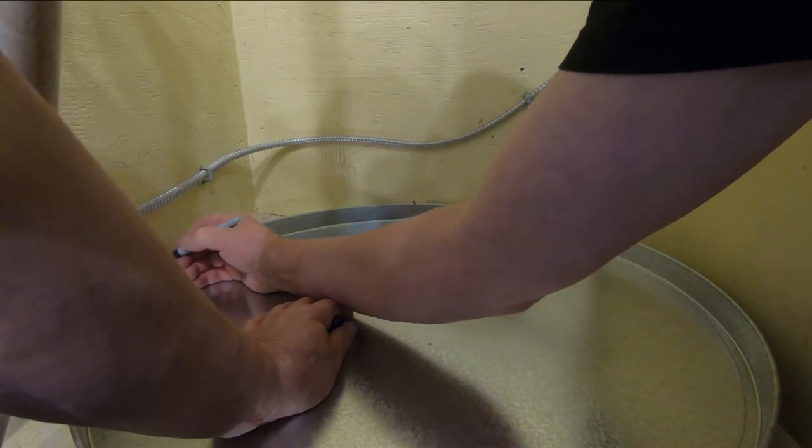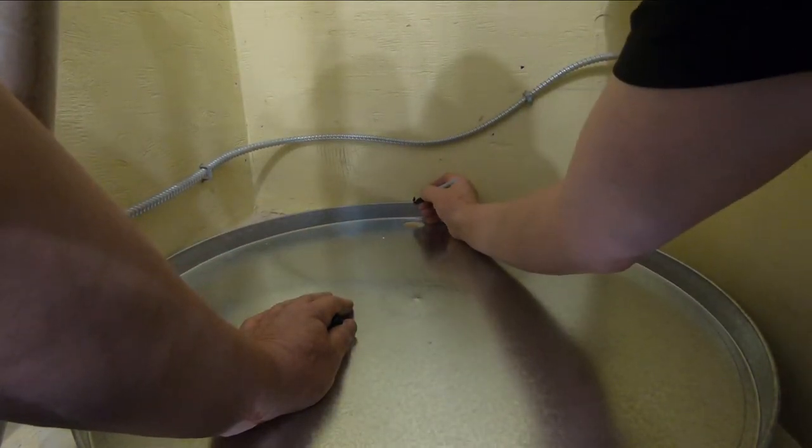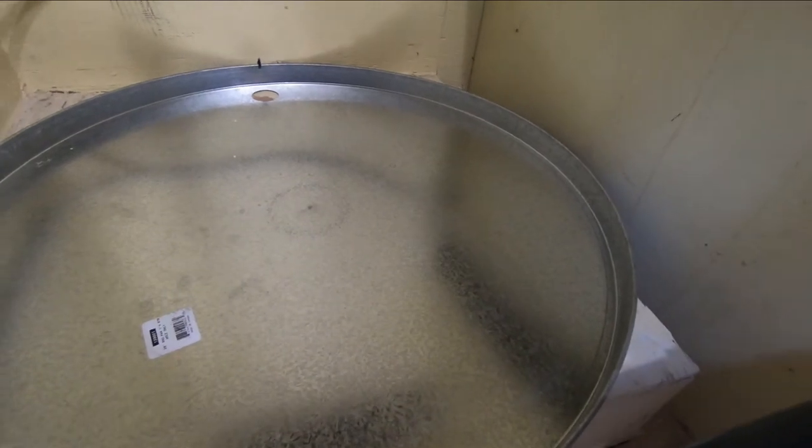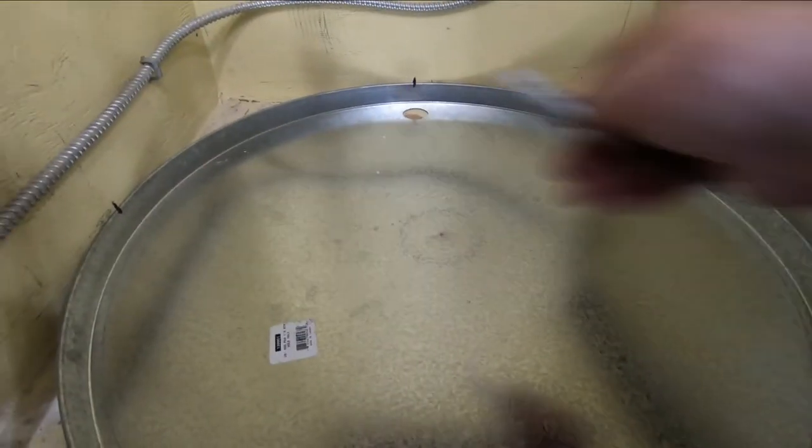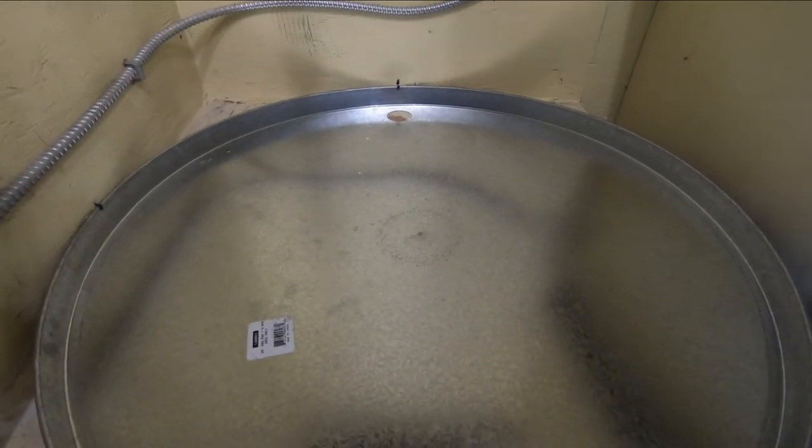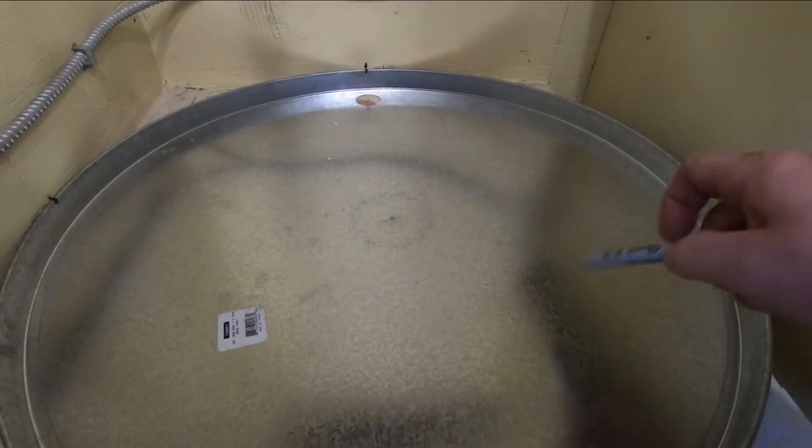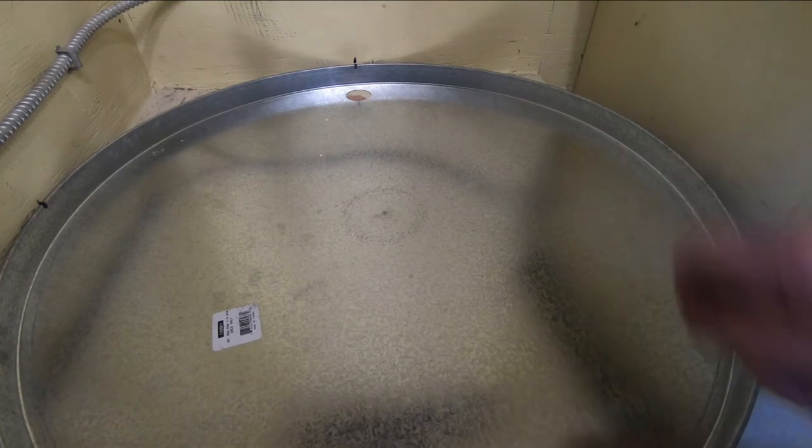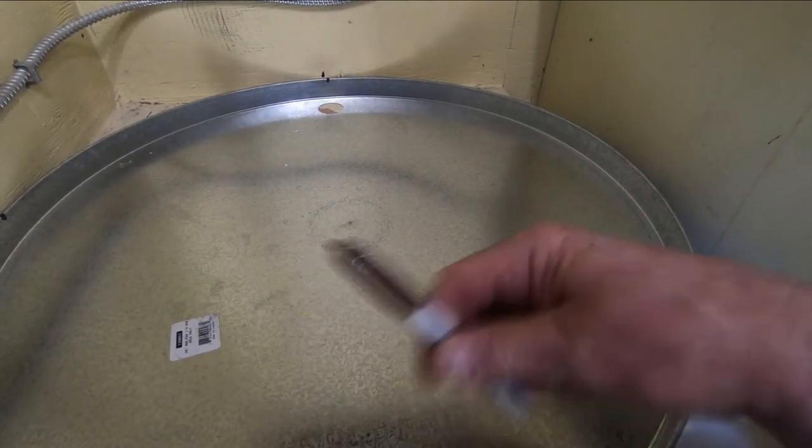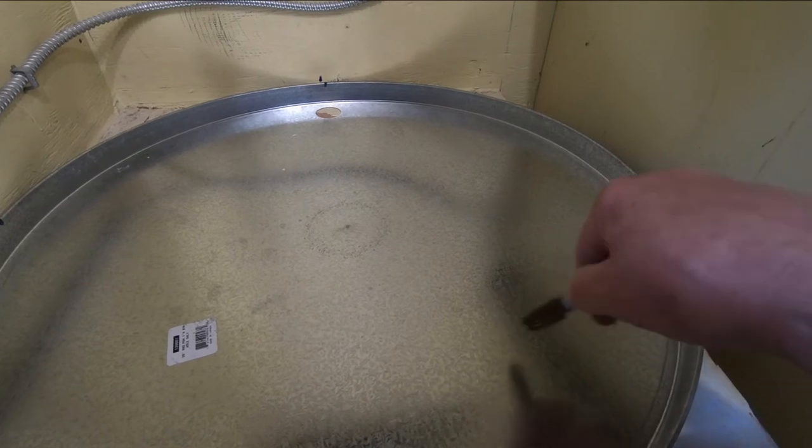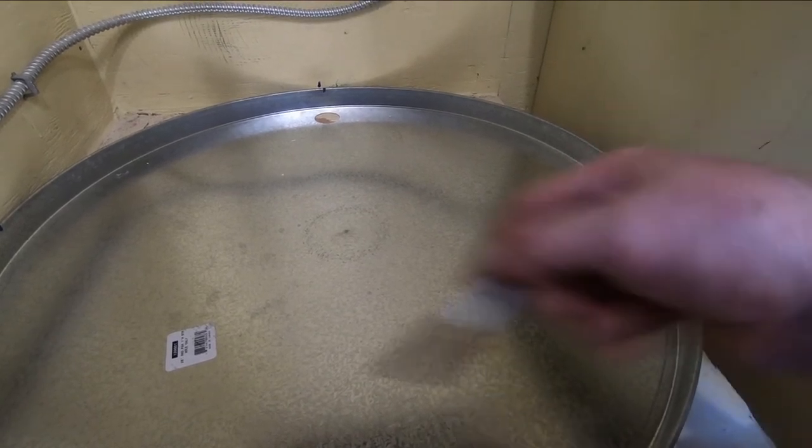Now that hole that I'm trying to find is right about here somewhere. If I could reach up in there with a marker I could just mark it directly onto here, but there's a pipe right in there, my drain pipe, that's in the way.